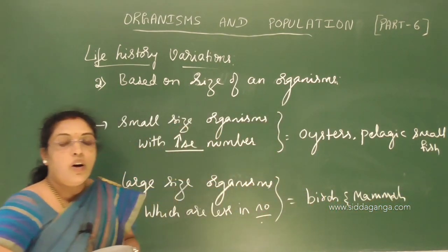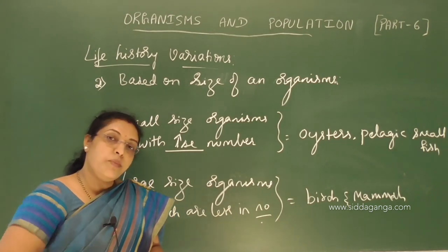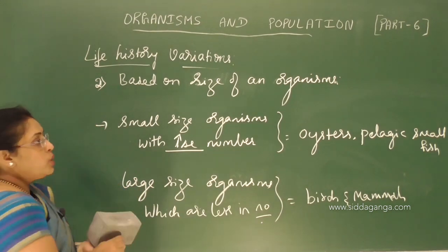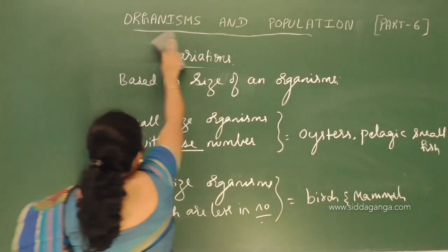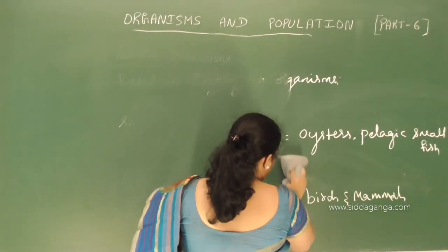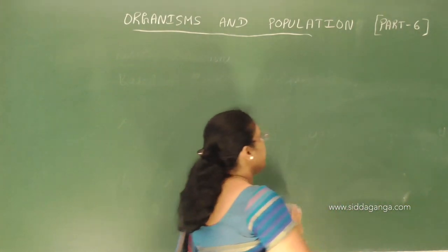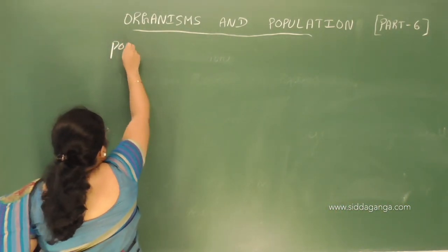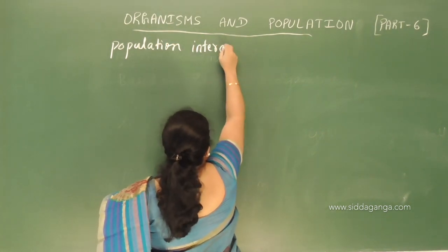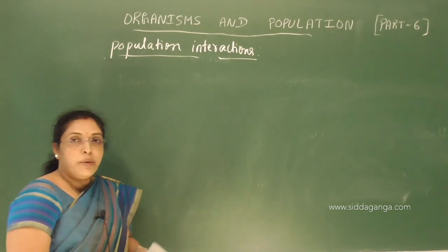If the organism size is less, the population size will be more. If the organism size is more, the population size or population density will be less. Next we will move with population interactions. There are two types: one is intraspecific interaction and another one is interspecific interaction.